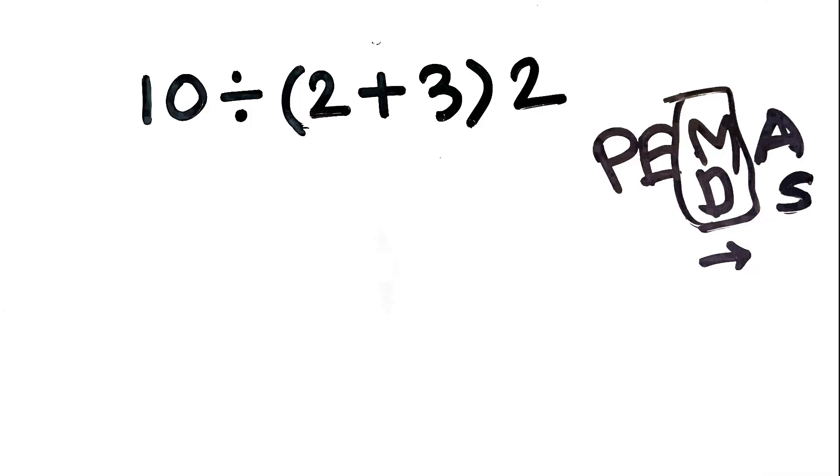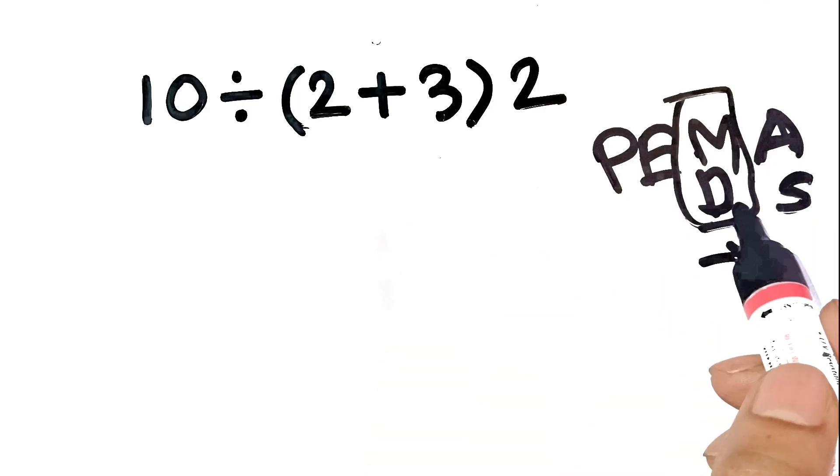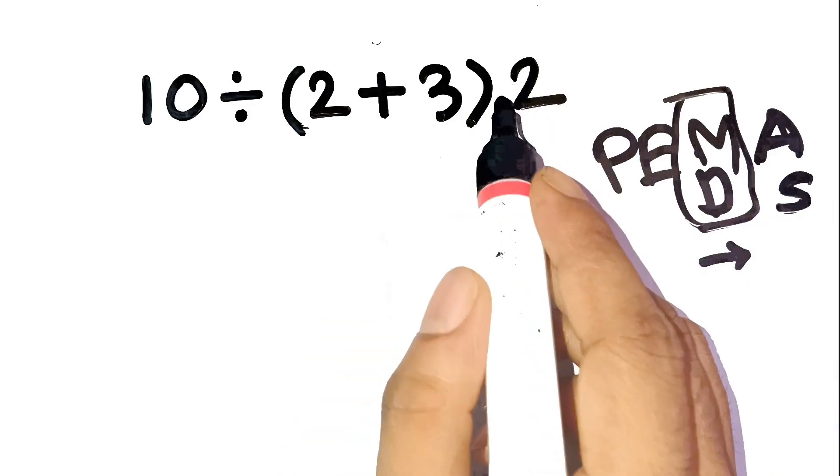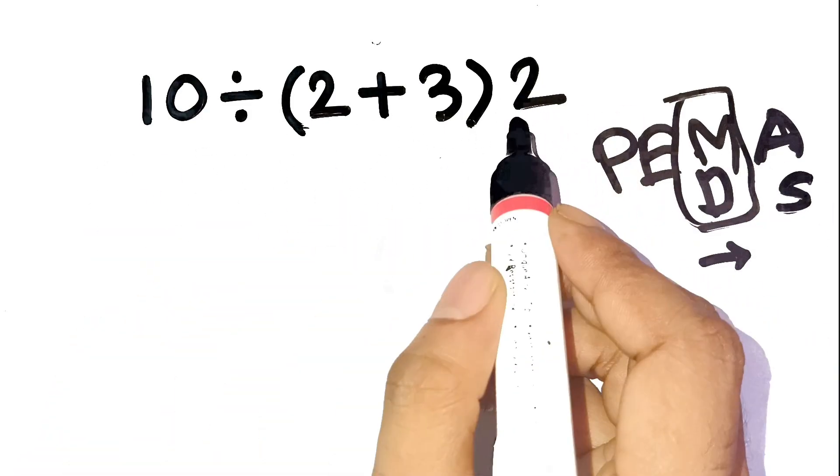Multiplication and division are on the same level. So we don't automatically multiply everything inside the parenthesis by what's outside. We go step by step, left to right.